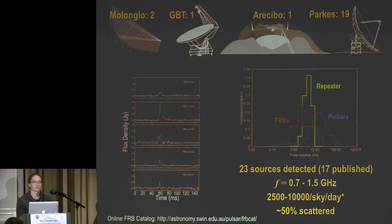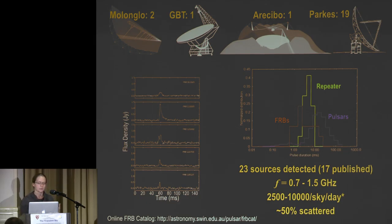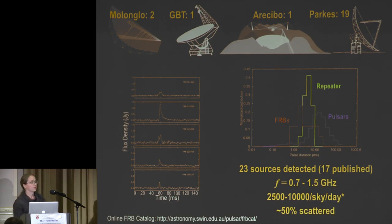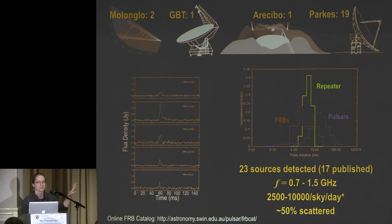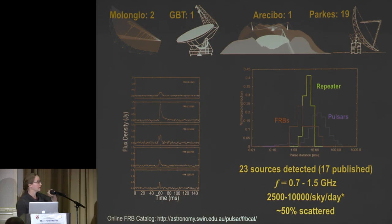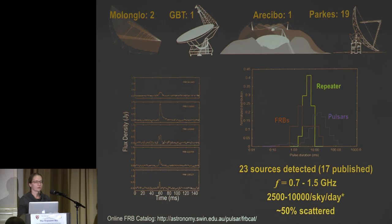The distribution of FRB widths is approximately the same as pulsars, though this plot doesn't account for instrumental broadening effects which push the measured widths of fast radio bursts broader. So the FRB curve would actually move to the left if properly accounted for — within the same range as pulsars, but not quite following the same distribution.